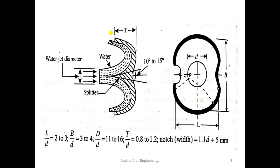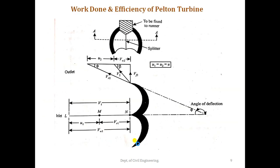This is the front view of the double hemispherical or double ellipsoidal bucket, showing the point where the jet is directed. These are some of the important relationships which we need to remember for designing the Pelton wheel turbine.